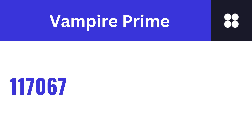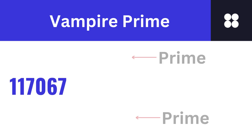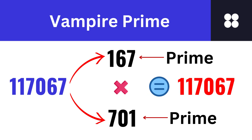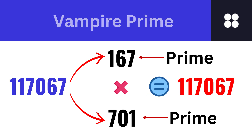A vampire prime, or prime vampire number, is a true vampire number whose FANGs are its prime factors. Consider the number 117067 — it can be expressed as 167 multiplied by 701, and you have the same digits on both sides.